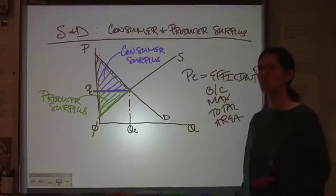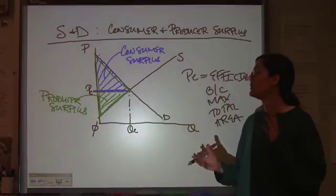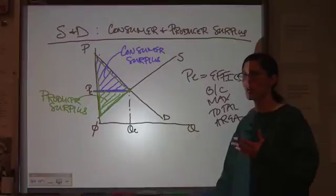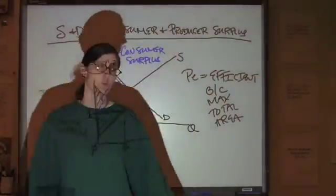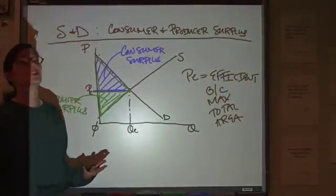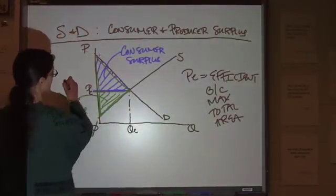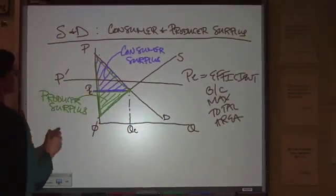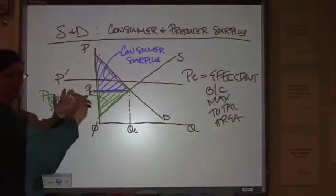Now, what happens if that price is out of whack? If you have people in the market as producers who are charging too much and the price hasn't adjusted yet, let's say for example that you're charging a price that's too high. Here's the market price, but what's actually being charged in the market is up here. Now, what does that mean for these areas?